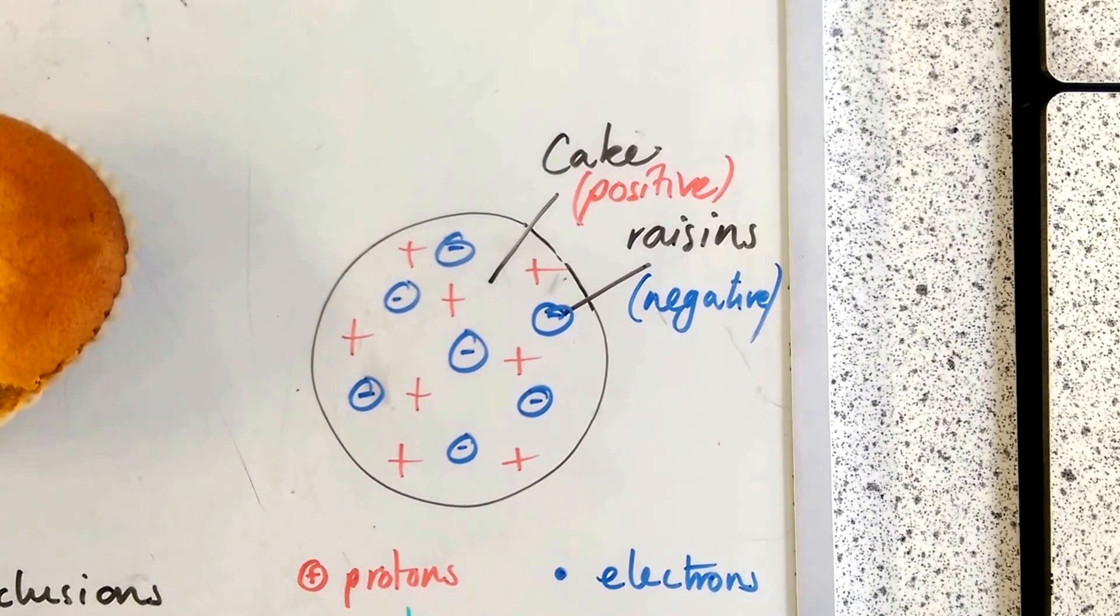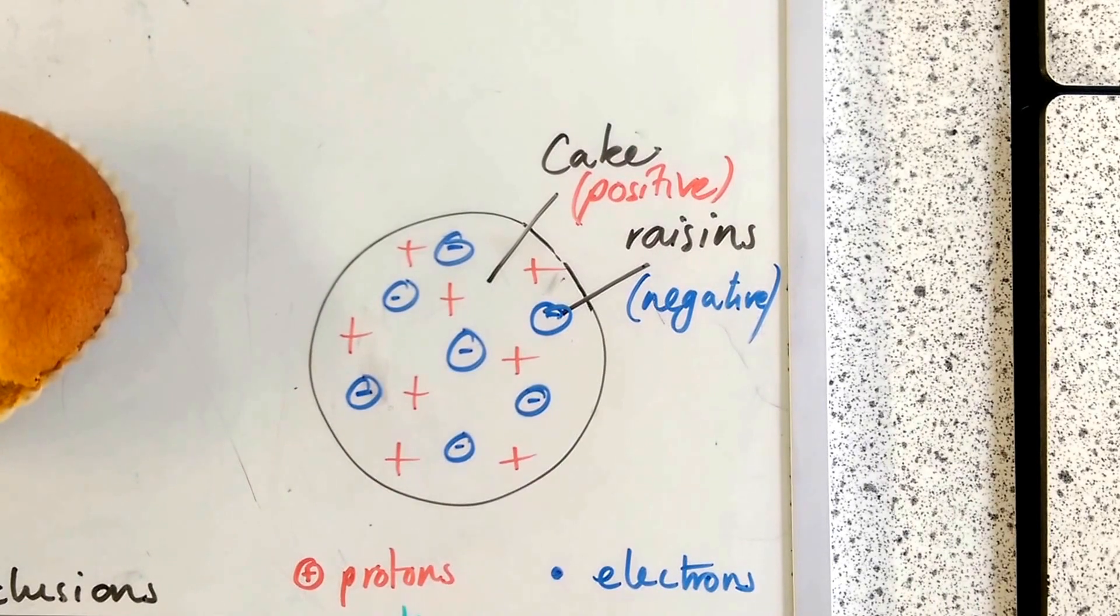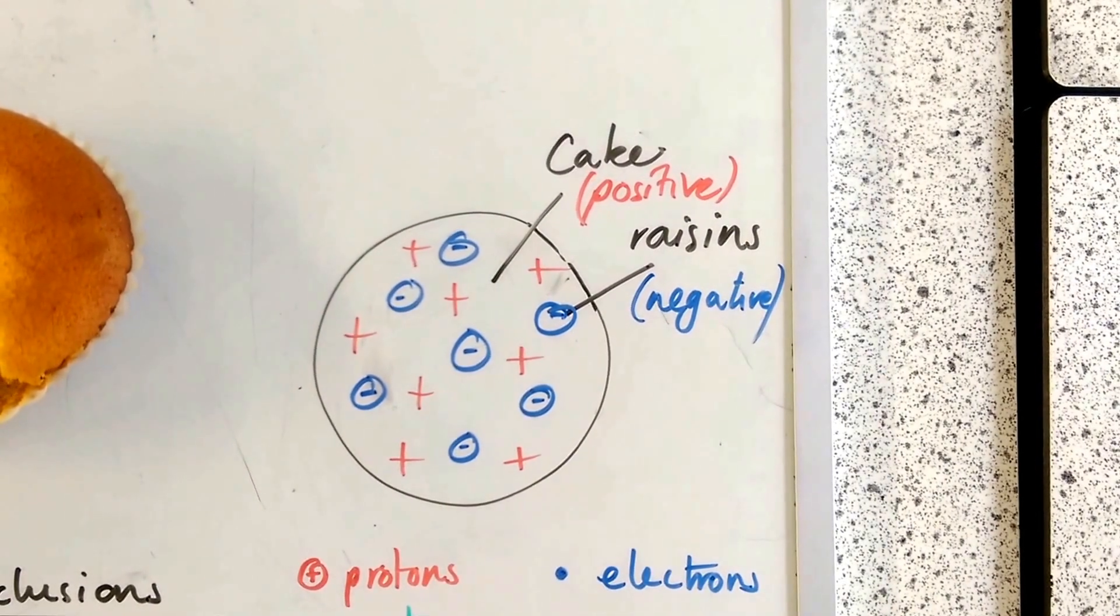This is the plum pudding model. And that again was absolutely fine and explained all of chemistry. Atoms just being different sizes of cake with different numbers of raisins.